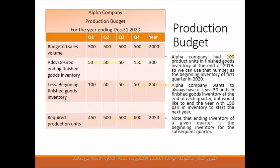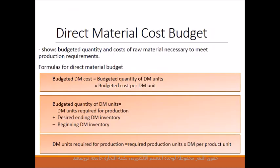Accordingly, the required production units are 450 units for the first quarter, 500 units for the second quarter, 500 units for the third quarter, and 600 units for the last quarter. The production budget in turn provides the basis for determining budgeted costs for each manufacturing cost element, including direct material, direct labour, and manufacturing overhead.